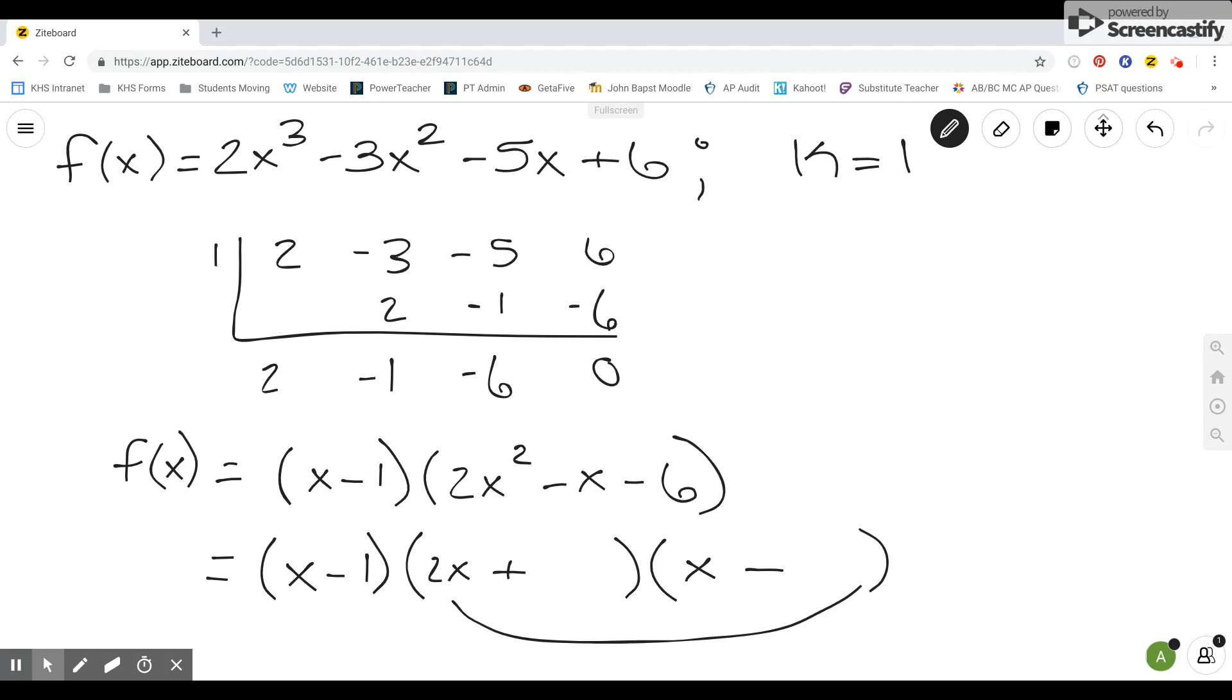whatever number is right there by 2x, I want that to be larger, or I want that to be negative. Because I know it's going to be larger than x times whatever this term right here is, theoretically. So let's see if that works. And if it doesn't, then we'll just swap our signs around.